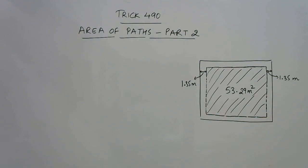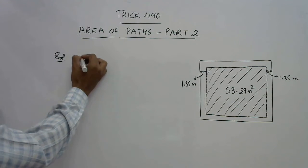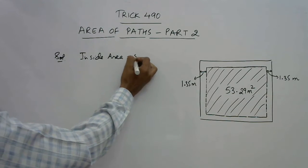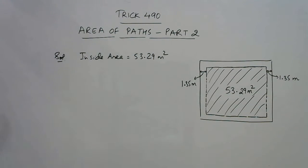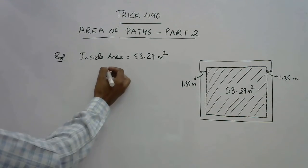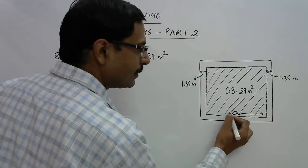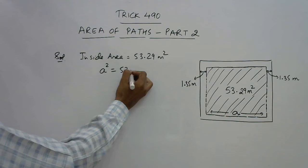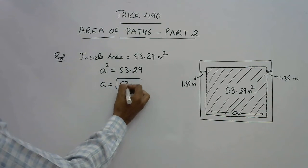See, the inside area is given as 53.29 meter square. I will assume the inside edge, this edge, as small a. So small a square is 53.29, so a is the square root of 53.29.